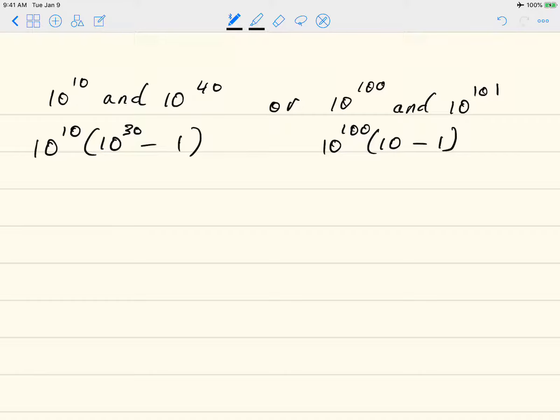And 10 to the 100th times 10 minus 1. So again, here you just look at the factor that you pulled out. The larger it is, that means there's a larger difference in distance between those 2 powers of 10. So clearly this will have the larger distance between the powers of 10 than this.